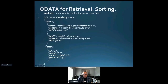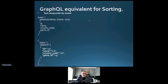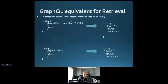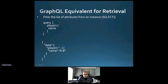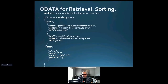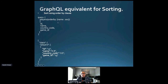For ordering in OData: $orderby=name, or $orderby=name desc for descending. In GraphQL, the syntax is a bit different — when you add arguments like filter or orderBy, you need parentheses around them. Inside the orderBy object, you specify the field and the sort direction: ASC for ascending or DESC for descending. It takes a little getting used to, but it's consistent across the framework.